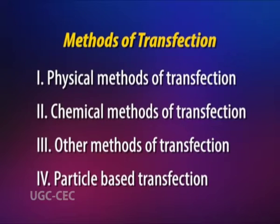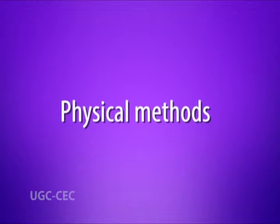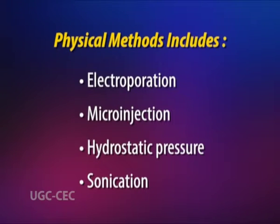There are following methods of transfection: physical methods, chemical methods, other methods, and particle-based transfection methods. Physical methods are used to deliver nucleic acid directly into the cytoplasm of eukaryotic cells. These include electroporation, microinjection, hydrostatic pressure, and sonication.